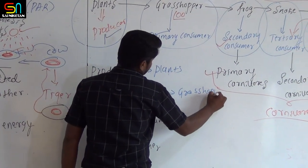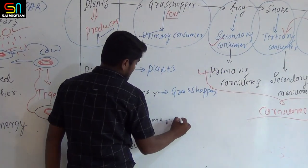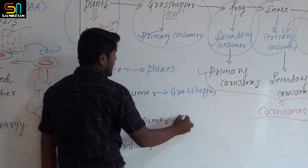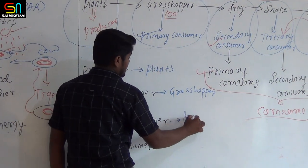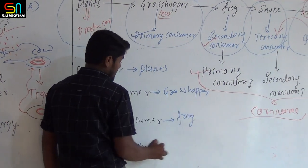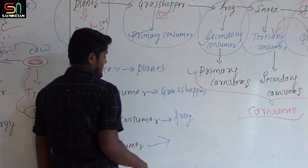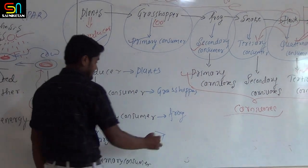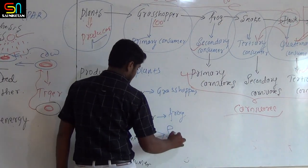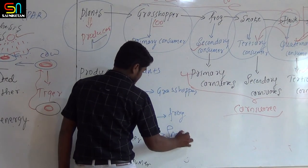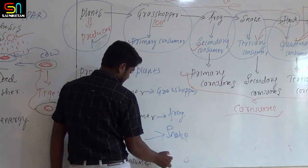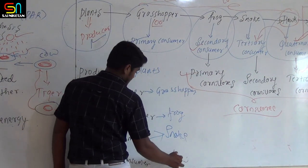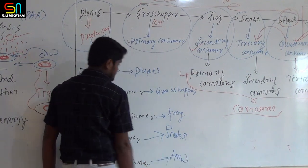Food chain example: plants → grasshopper → frog → snake → hawk.